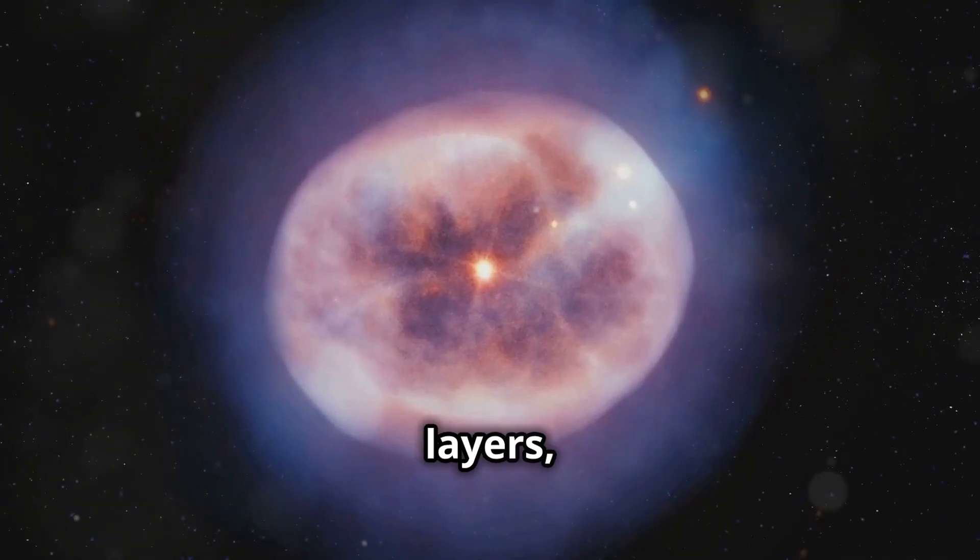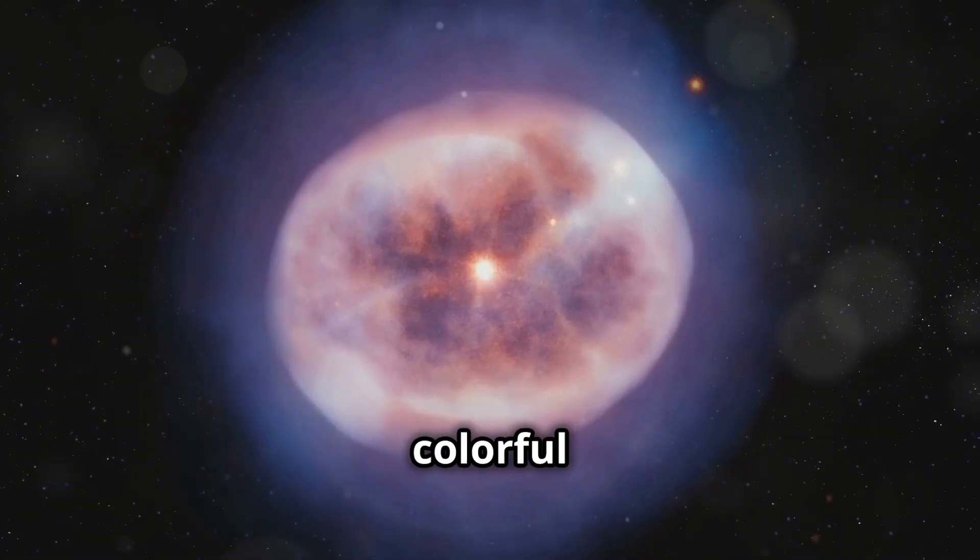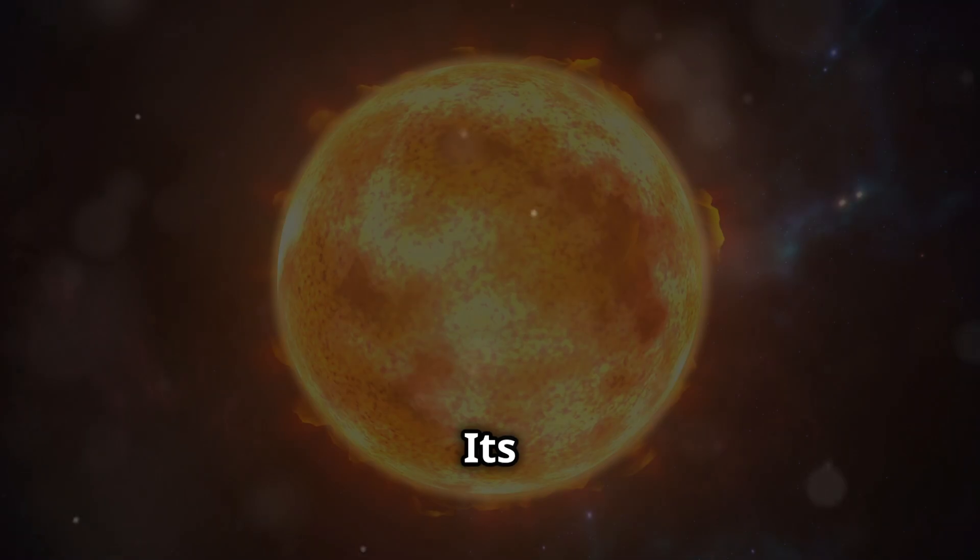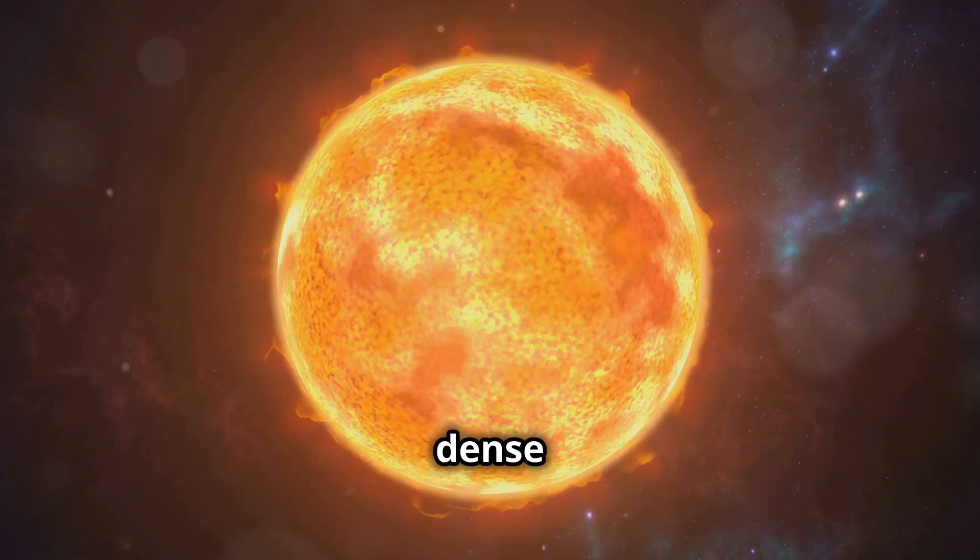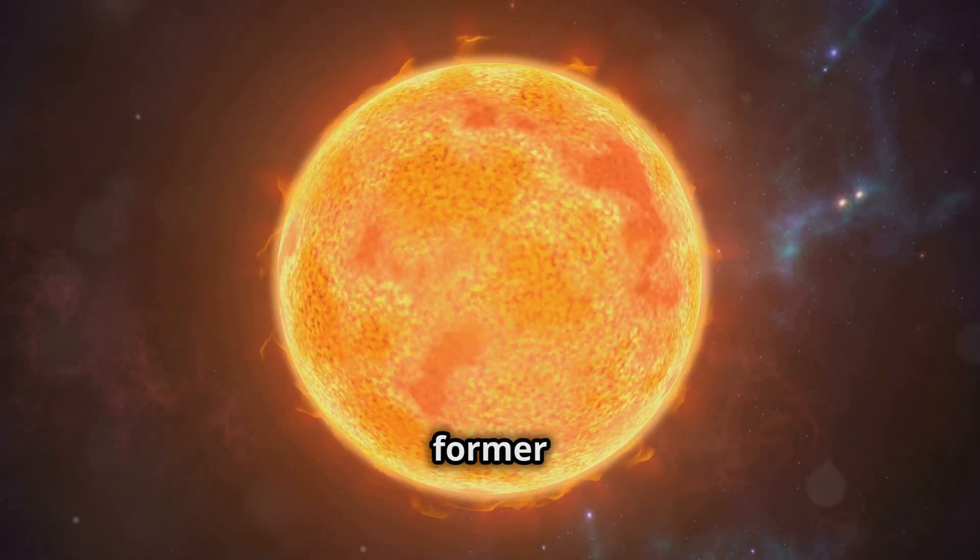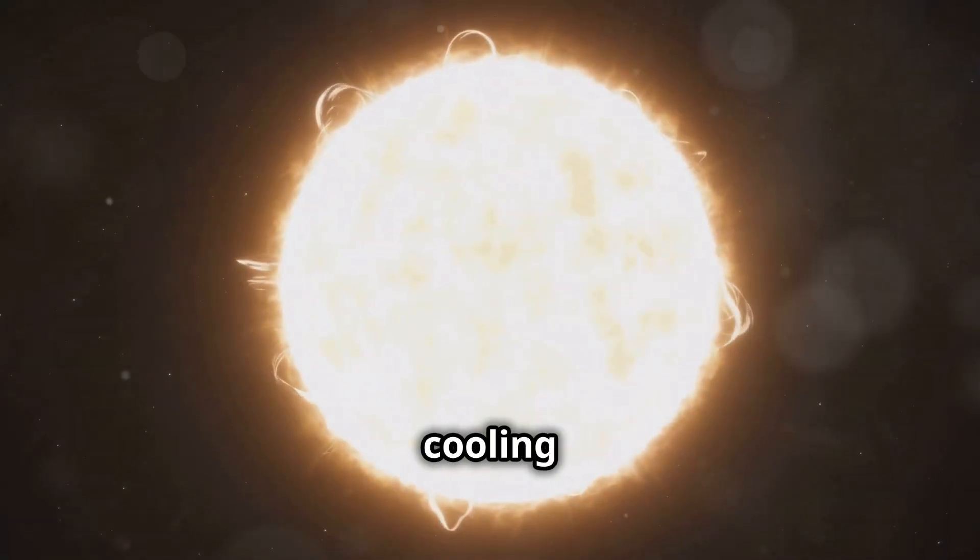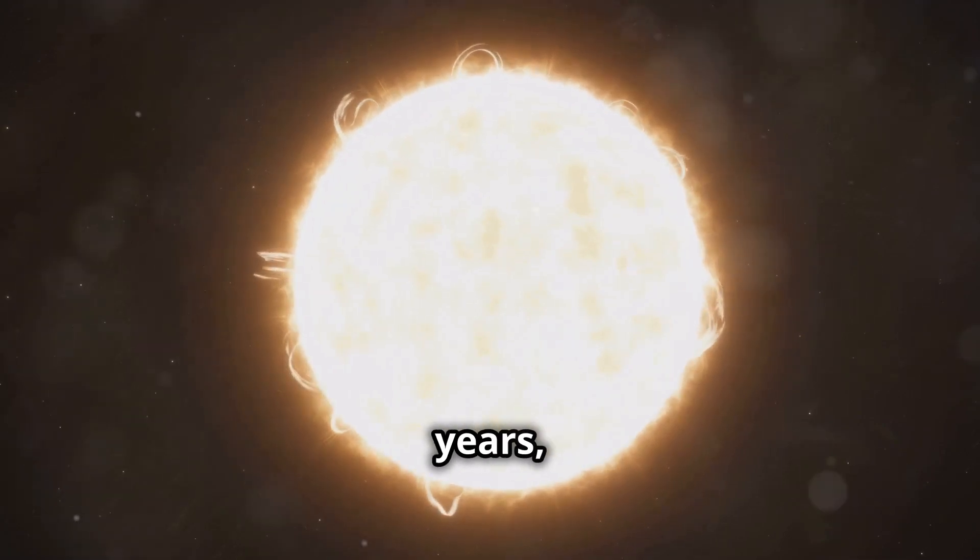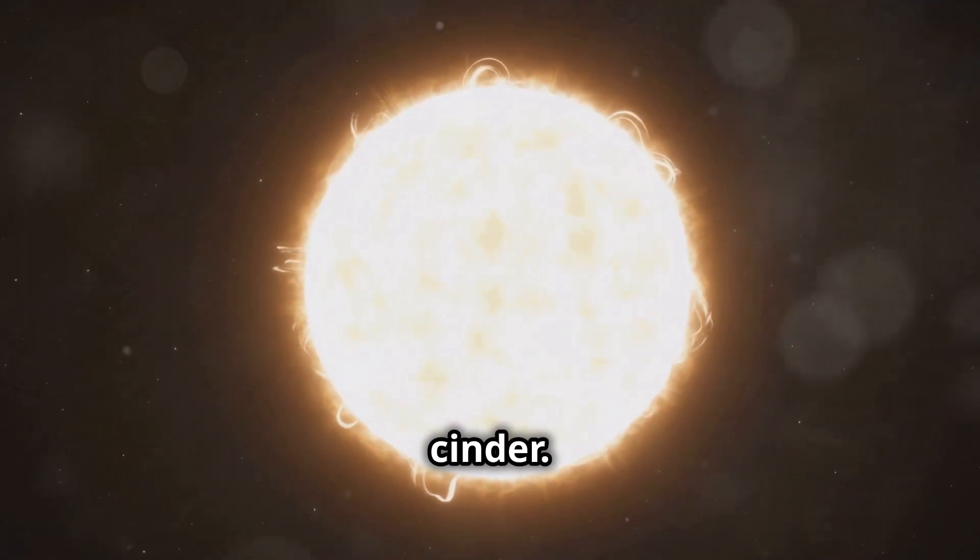Eventually, the sun will shed its outer layers, forming a beautiful and colorful planetary nebula. Its core will then collapse into a dense white dwarf, a remnant of its former glory, slowly cooling and fading over billions of years, becoming a cold, dark cinder.